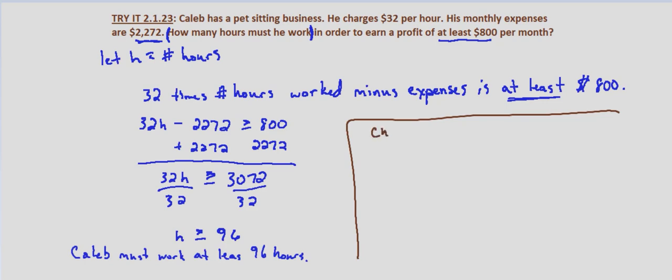We'll start with one less, 95 hours. 32 times 95 minus 2,272 equals 768, which is less than $800. So 95 hours isn't enough.